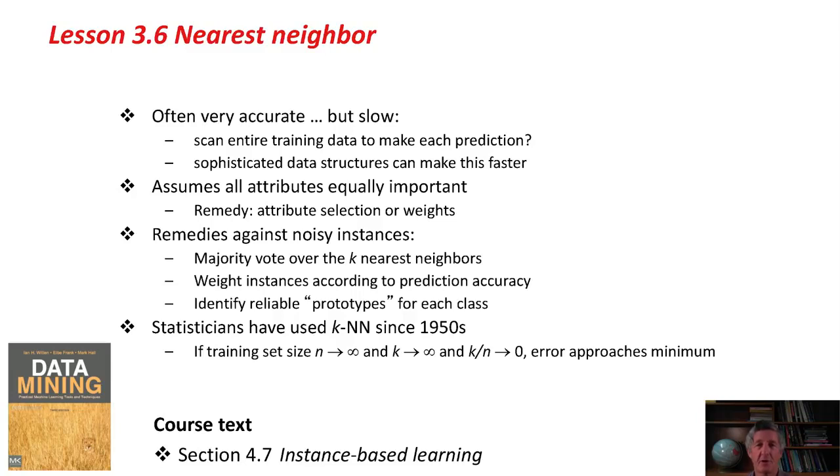If we've got noisy instances, then we can use a majority vote over the k nearest neighbors, or we might weight instances according to their prediction accuracy. Or we might try and identify reliable prototypes, one for each of the classes. This is a very old method. Statisticians have used k nearest neighbors since the 1950s, and there's an interesting theoretical result that if the number of training instances approaches infinity, and k also gets larger in such a way that k over n becomes 0, but k also approaches infinity, the error of the k-nearest-neighbor method approaches the theoretical minimum error for that data set. So there's a theoretical guarantee that with a huge data set and large values of k, you're going to get good results from nearest-neighbor learning.